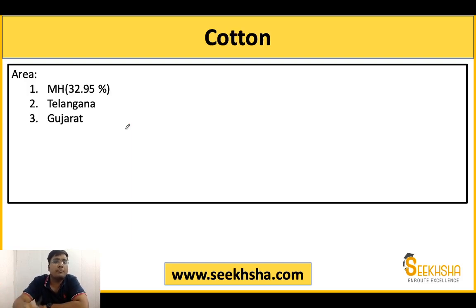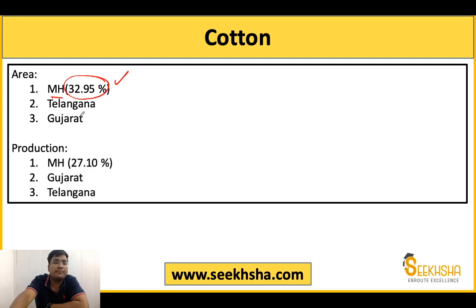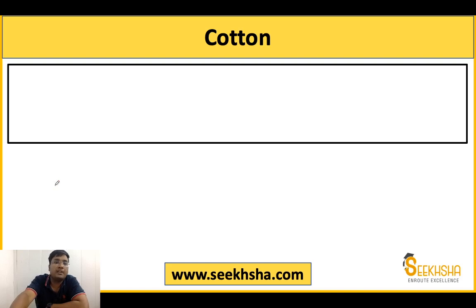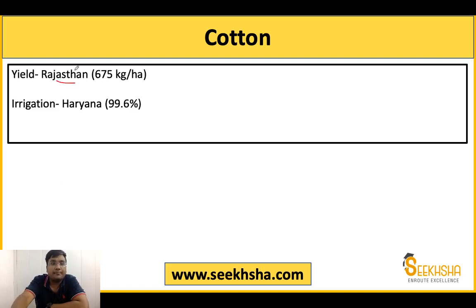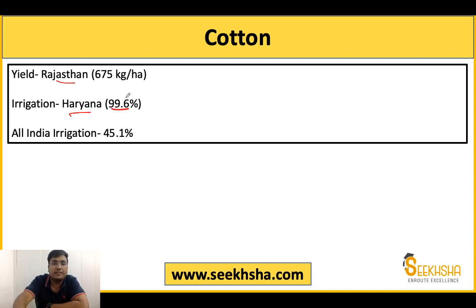Moving to cotton: Maharashtra has the most area at 32.95%, followed by Telangana and Gujarat. Maharashtra also leads in production at 27.10%, followed by Gujarat and Telangana. For yield, Rajasthan has the highest. For irrigation, Haryana is most developed at 99.6%, and the All India irrigation for cotton is 45.1%.